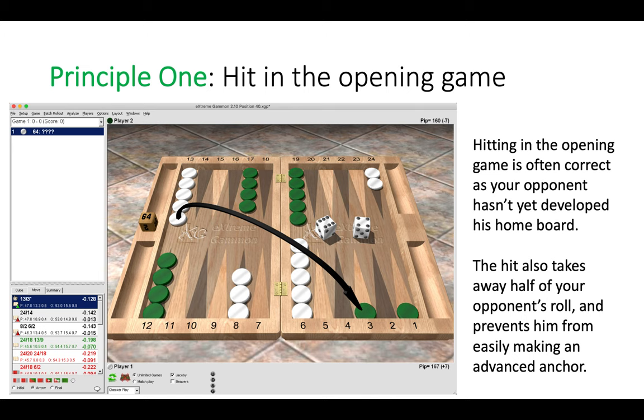Very importantly, it prevents him from easily making an advanced anchor. Without hitting here, if green rolled a two then he could make his anchor, and then that would mean you wouldn't be able to hit him as white. Of course, he would also have a safe landing point if you were to pick up another checker later in the game.